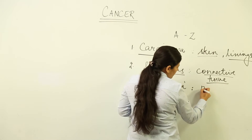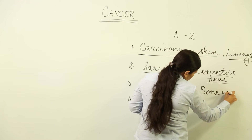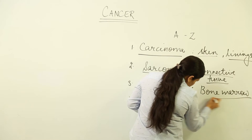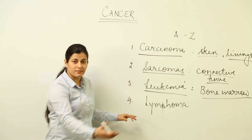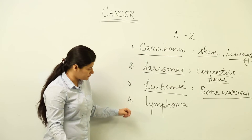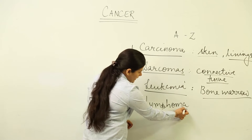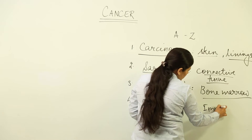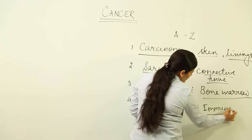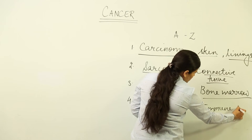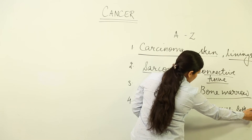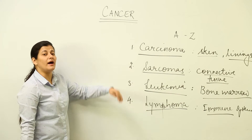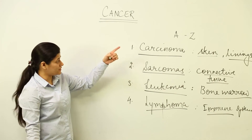The next type is leukemia, commonly called blood cancer. It infects the bone marrow, which is why people who suffer from leukemia need bone marrow transplants time after time. The last one is lymphoma — the cancer of the immune system. The word 'lymphoma' tells you that we are dealing with immune cells and the immune system.